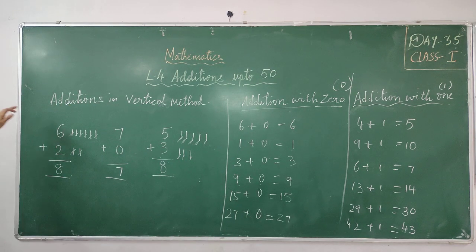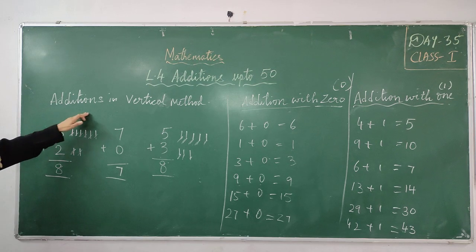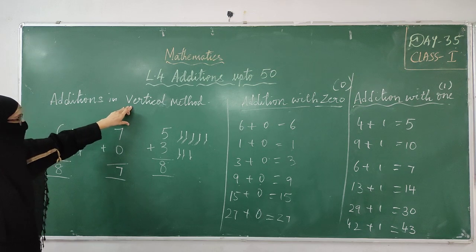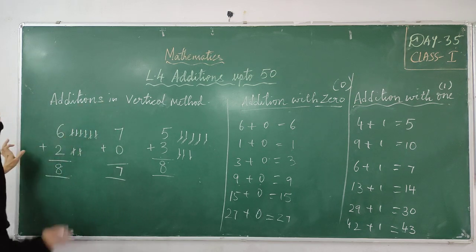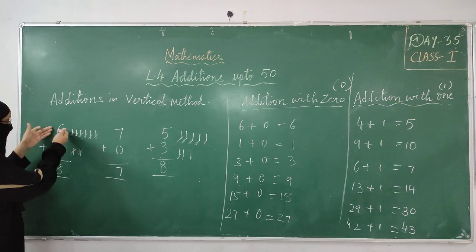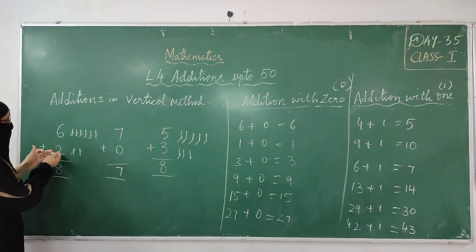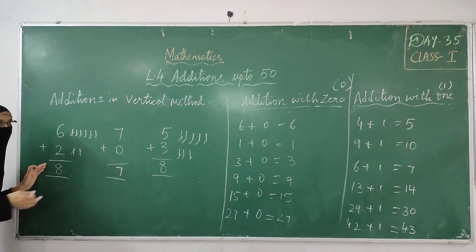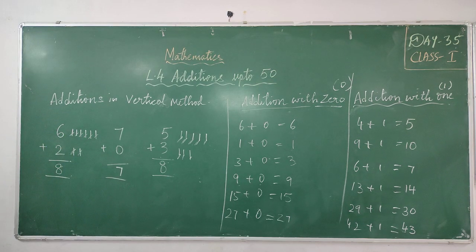So this is additions and how we have to do them in a vertical position — the vertical method. In the previous class I told you the horizontal method. In vertical method, you keep lines for the first number, then below that the second number's lines, add them all together, and write the answer. Hope you all have understood, children. Thank you.